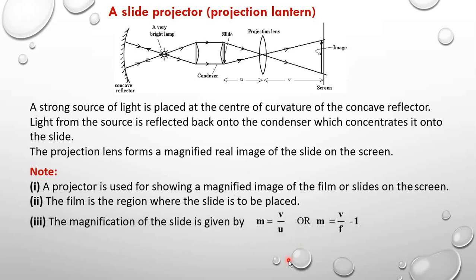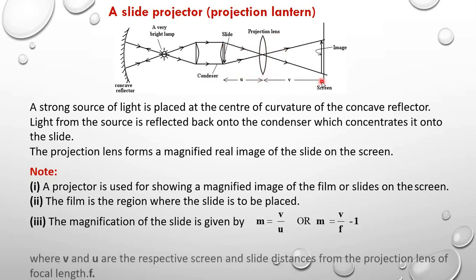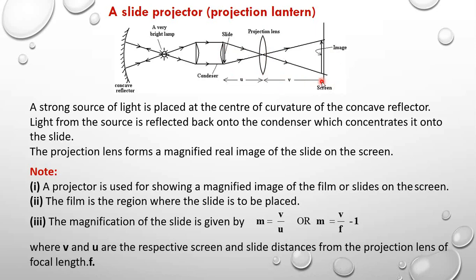So M = V/U or V/F − 1, where V and U are the respective distances from the projection lens to the screen and from the slide to the projection lens. F is the focal length of the projection lens.